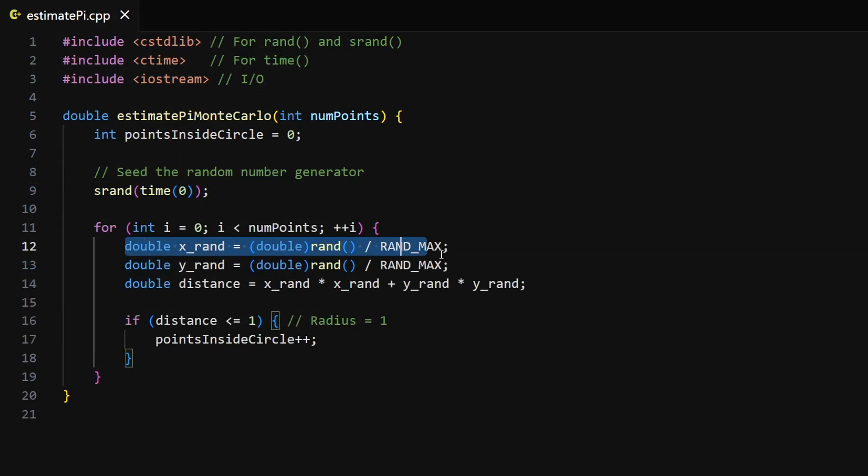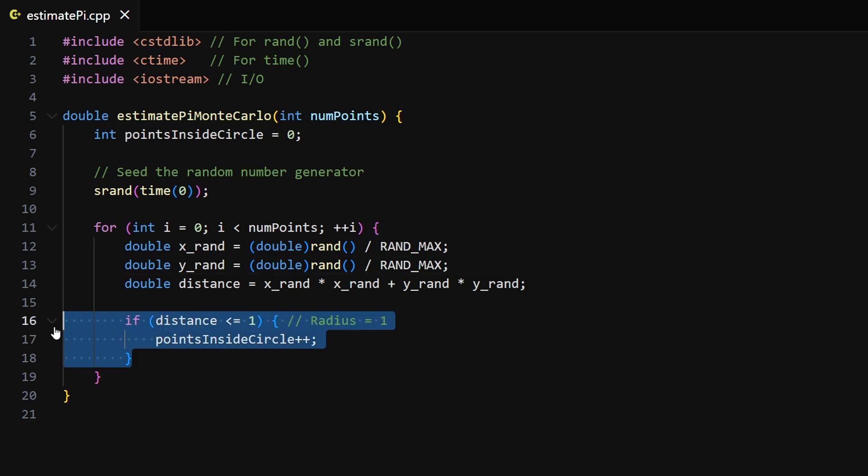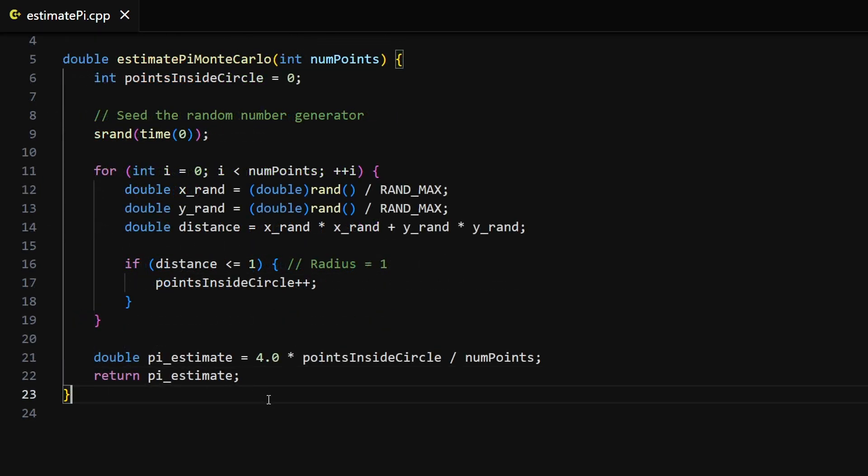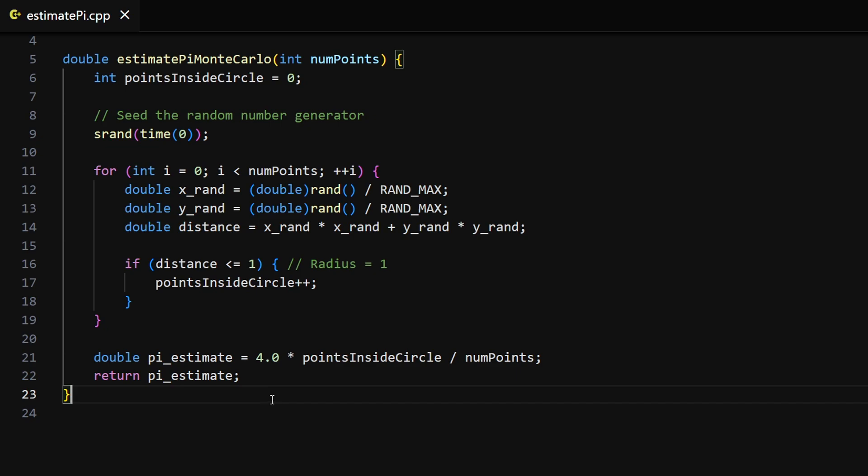On each iteration, I generate a random point and check if this point is inside the circle. I chose a circle with a radius equal to 1. After this for loop, as we discussed before, we can compute the number pi which I then return.